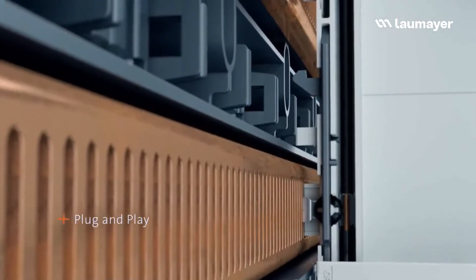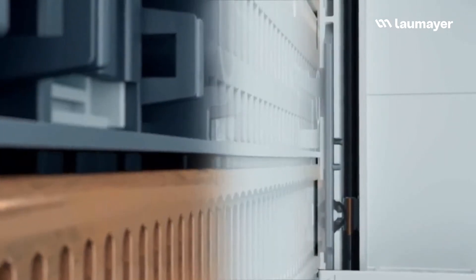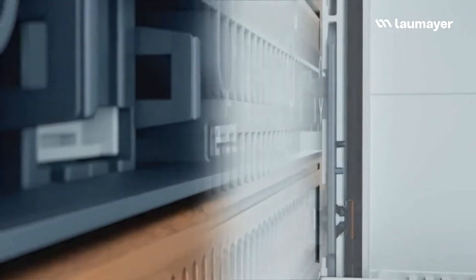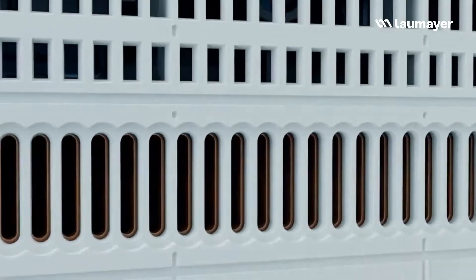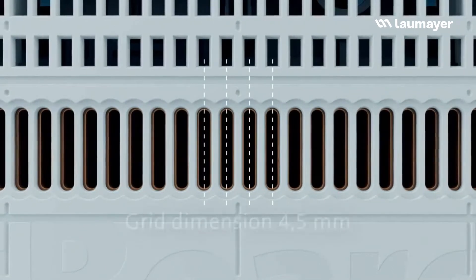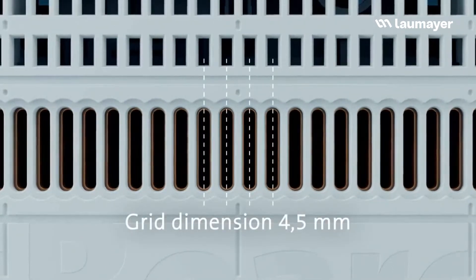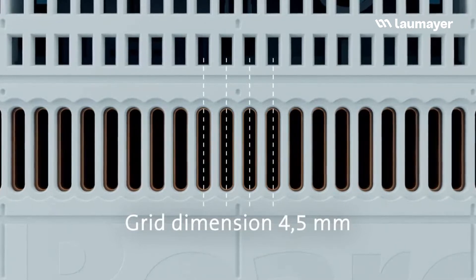The integrated reverse polarity protection ensures correct fitting of the component. The 4.5 mm common grid housing offers the user great flexibility when mounting components on the Cross Board.